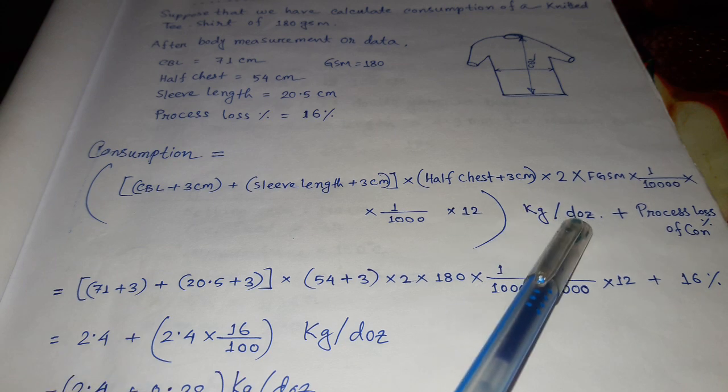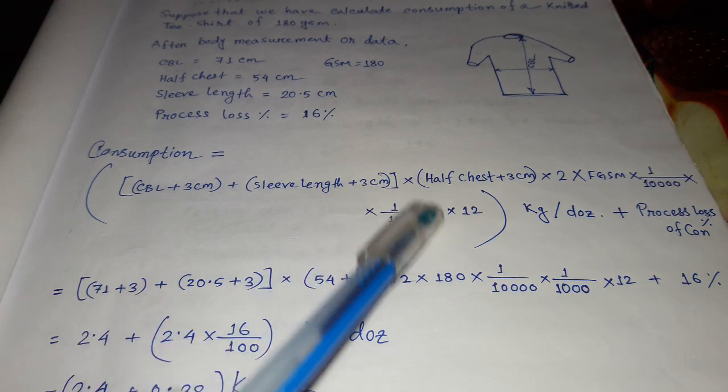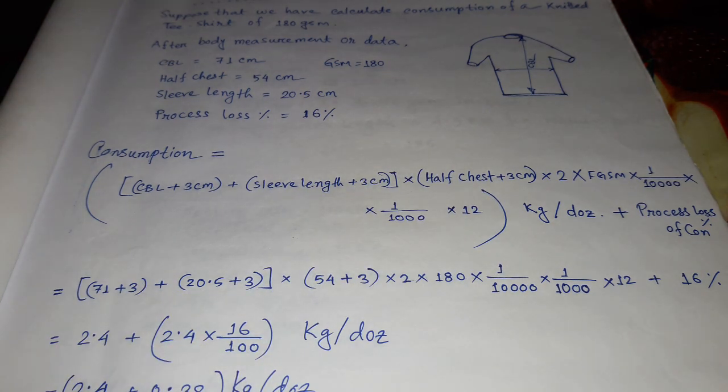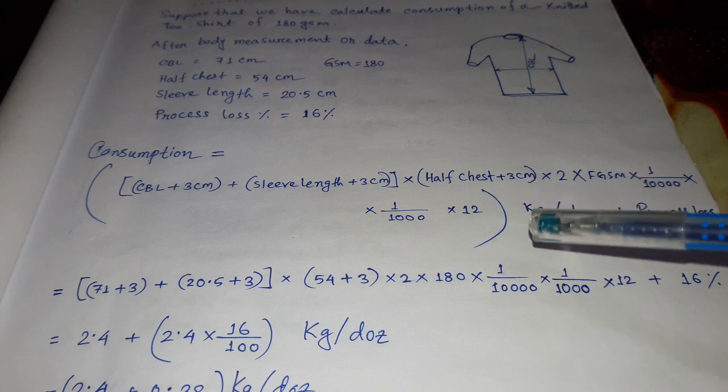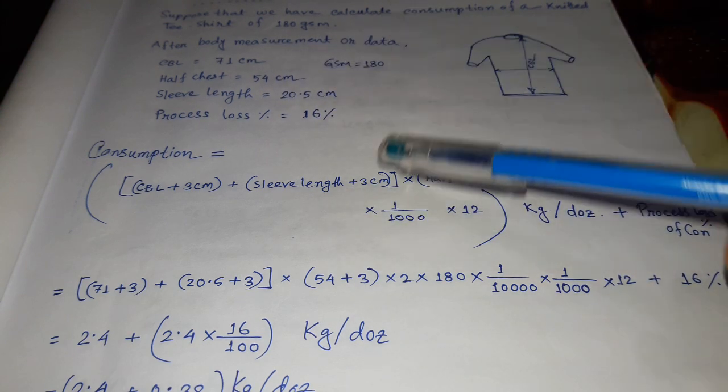Then it is coming kg per dozen. After this calculation, we have to add the process loss based on its consumption. I have added it here. Now we put the values that are given from buyer or from body measurement.